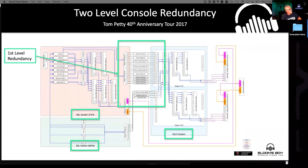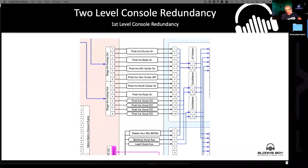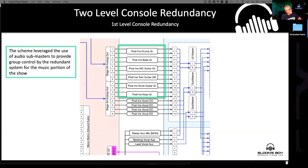Zooming in on the first level of redundancy — those are all the subgroups transporting over to the S3L. It's all post-insert, so it's not necessarily following the fader position I had on the S6L; it's coming above the fader. So I had full fader control of the overall group level in the S3L.